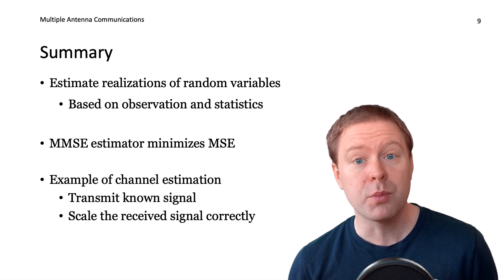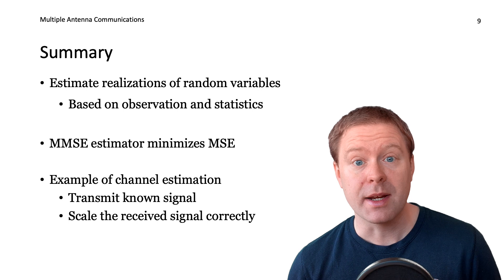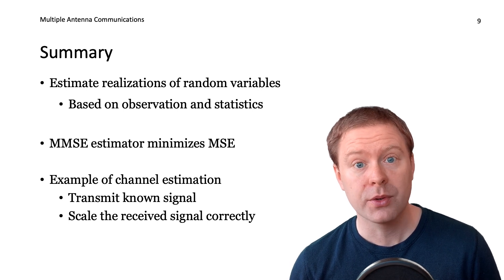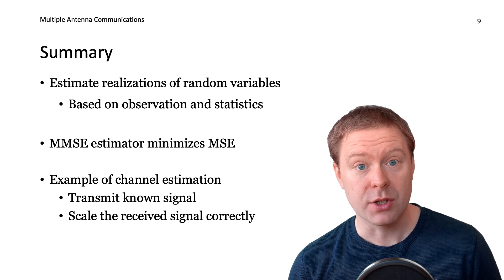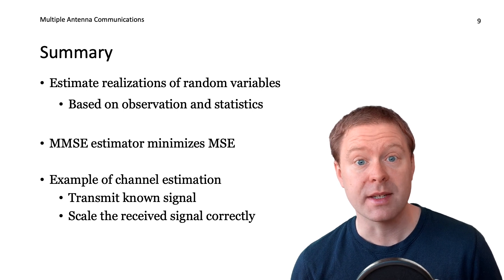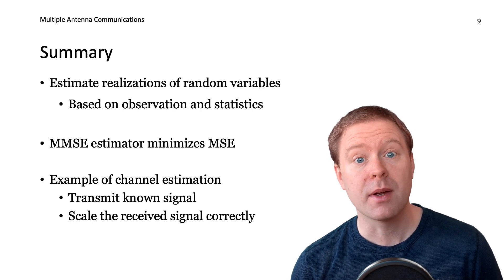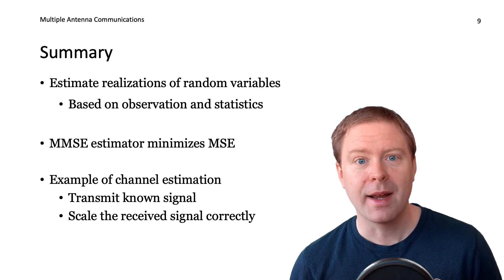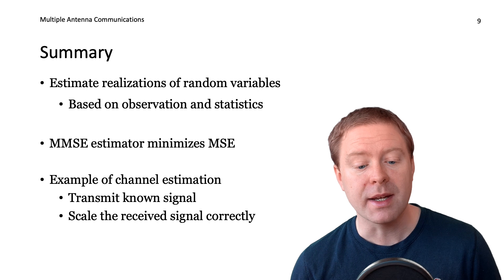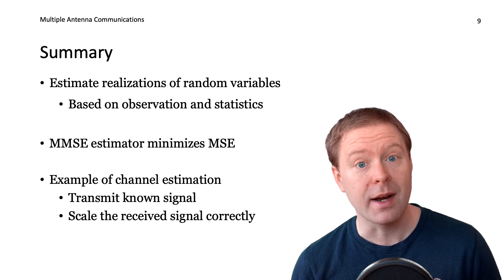In summary, there are many unknown parameters in wireless communications that we would like to learn. The ones that are most challenging to estimate are realizations of random variables, particularly when we get new realizations over time — we have a limited number of noisy observations and must use statistics to develop good estimators. The minimum mean squared error estimator is the best in terms of minimizing the MSE. In this video, I have exemplified these properties and discussed how to estimate the channel by sending a known pilot signal and scaling the received signal to get the MMSE estimate.